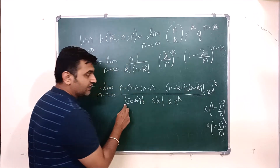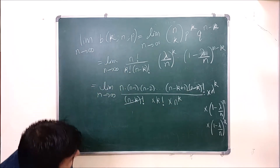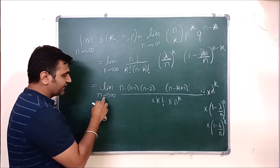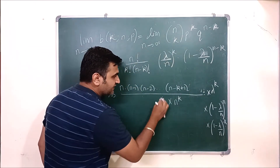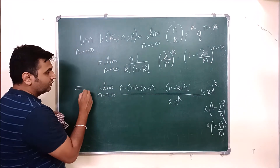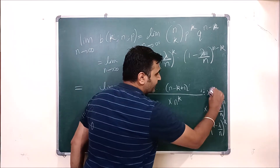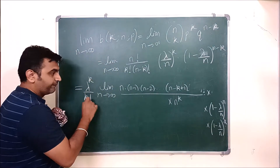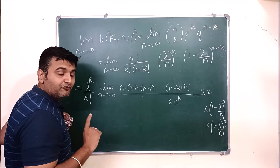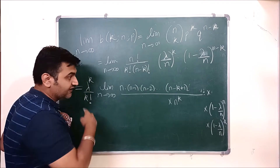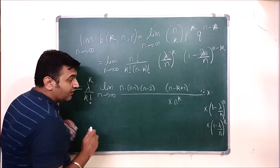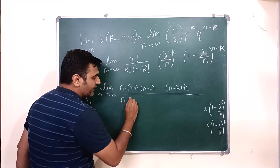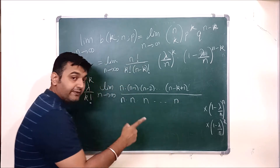Now you can see the (n minus k) factorial cancels. Also, k factorial, lambda, and k are all independent of n, so we can take lambda raised to k over k factorial outside the limit. What remains in the numerator from expanding n factorial is n times (n minus 1) times (n minus 2) — k factors in total — while the denominator has n raised to k, meaning n multiplied k times.